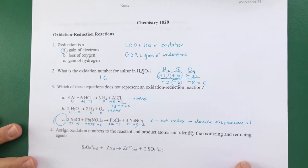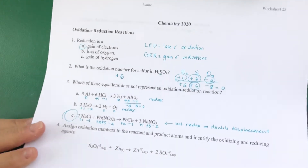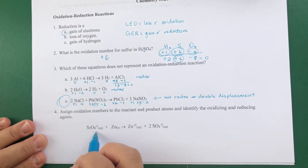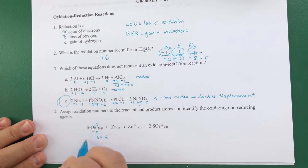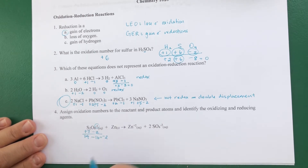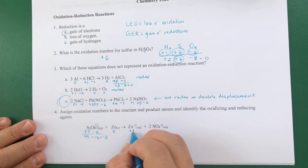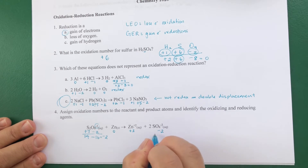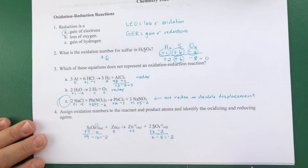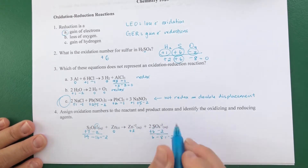Now assign oxidation numbers to the reagents and products. Oxygen is usually negative 2; with 8 oxygens that's negative 16. The overall charge on S₂O₈²⁻ is negative 2, so the two sulfurs must add up to plus 14, meaning each sulfur is plus 7. Pure zinc is zero. For zinc sulfate (ZnSO₄): oxygen is negative 2, four oxygens give negative 8, the overall charge is negative 2, so sulfur here is plus 6. We only look at individual atoms, not coefficients.